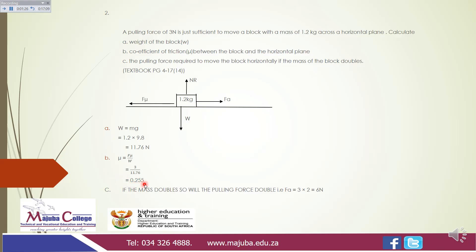For part C: find the pulling force if the mass of the block is doubled. The applied force fa = 3 × 2 = 6 N.